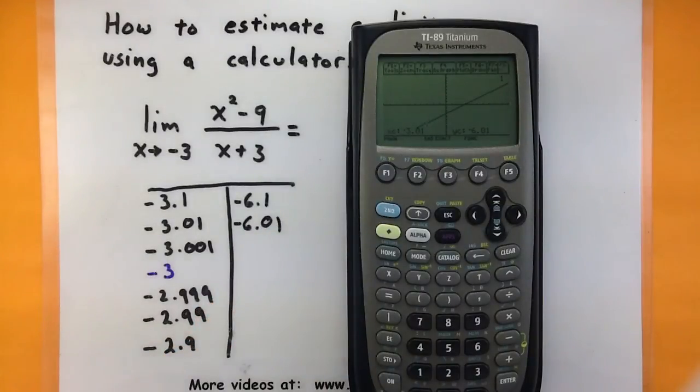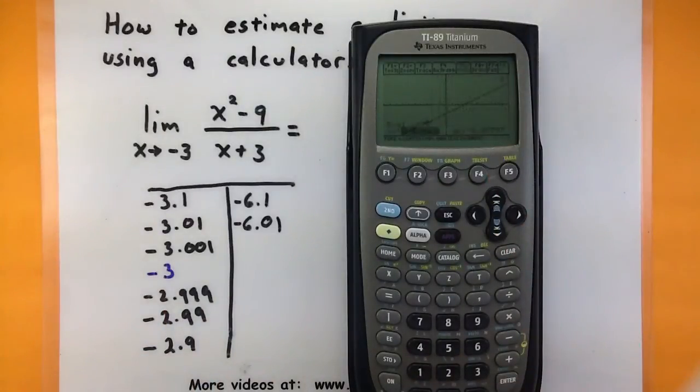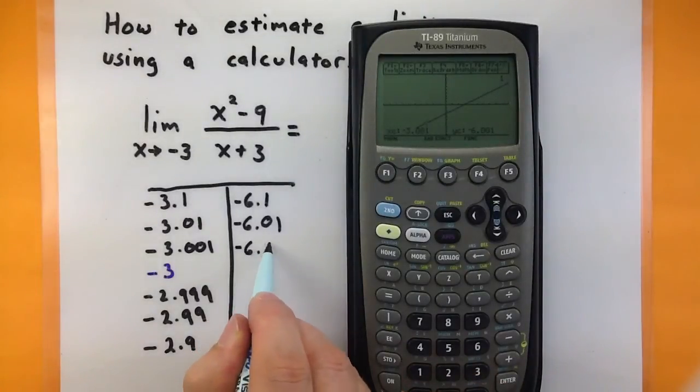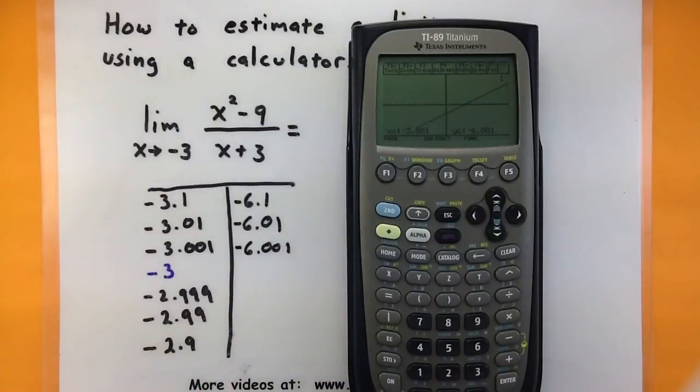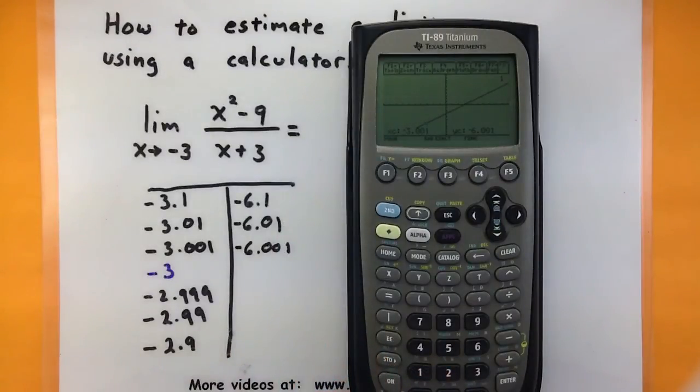So as we're choosing things on the left side of negative 3, already we can see that our y values are getting close to a negative 6. Before we can really say that that limit is negative 6, let's go ahead and check some things on the right side of negative 3 just to be sure. Because we have to make sure it's approaching on both sides.